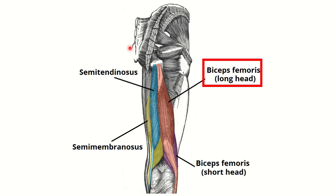In this picture also, this is the posterior view of the right thigh, and we can see posteriorly and laterally there is this muscle — the biceps femoris. This is the long head of the biceps femoris, and it is located posterior-laterally in relation to the thigh.